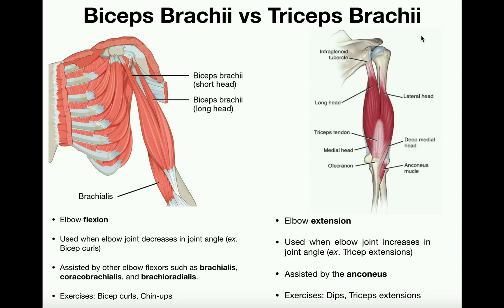First, let's talk about the biceps brachii. The biceps brachii are the agonists of elbow flexion, which is the process by which the elbow joint angle decreases. So if you imagine your elbow joint extended out to 180 degrees and curl your arm upward — bend your elbow — that process is elbow flexion. When your elbow bends, its joint angle decreases, and the major agonist of this motion is the biceps brachii.